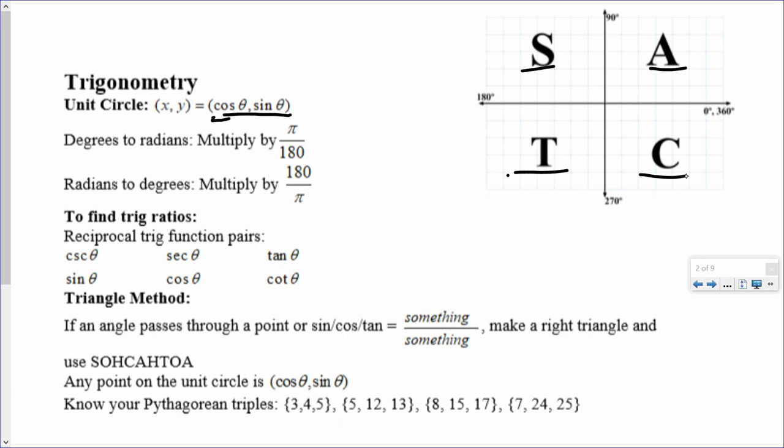To convert between degrees and radians, you are multiplying. If you're going to radians, then pi is on top. If you're going to degrees, then 180 is on top.